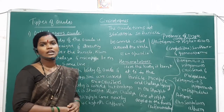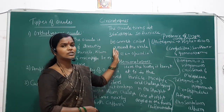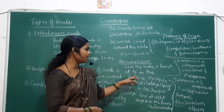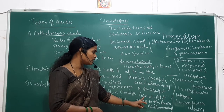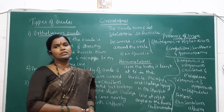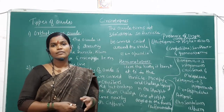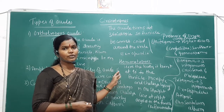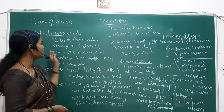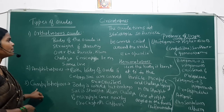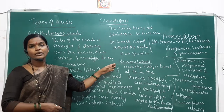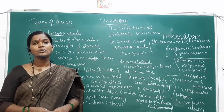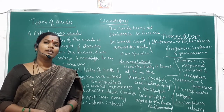The circinotropous ovule is one that turns completely at 360 degrees, so the funicle becomes coiled around the ovule. Example: Opuntia. The hemianatropous ovule has the body bent at 90 degrees to the funicle, with the micropyle and chalaza lying in a straight line at right angles to the funicle. Example: Ranunculus. These are the types of ovules based on shape.